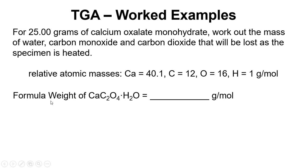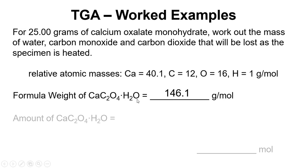The first thing we need to do is work out the formula weight of the calcium oxalate monohydrate, and this works out to be 146.1 grams per mole. If you want to pause the video and check that, you can, because we've got the relative atomic masses of the atoms here and the molecular formula here.